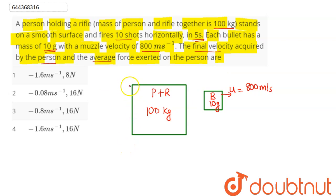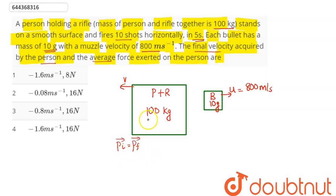To find the final velocity, suppose it is v. Since no external force is acting on the system, we can conserve the momentum. Initial momentum of the system equals final momentum of the system. Initial momentum will be equal to zero, as initially the system — person, rifle, and bullet taken together — is at rest.